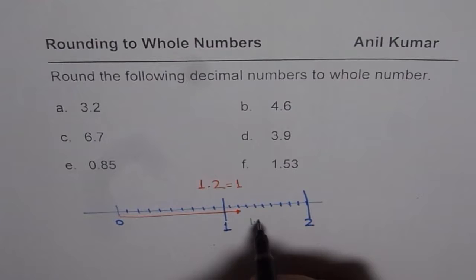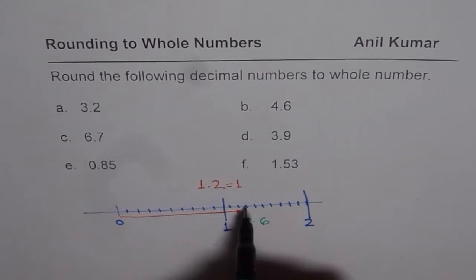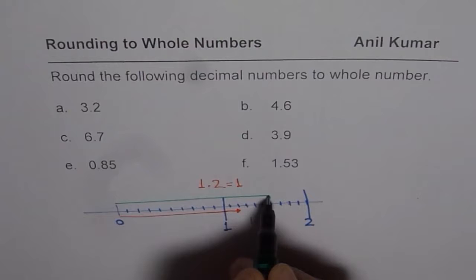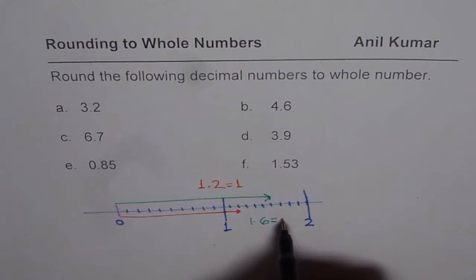If you have a line which is, let us say, 1.6, in that case, this is 0.1, 0.2, 0.3, 0.4, 0.5, 0.6, right? So the line is going to be that long. Clearly, this line is closer to 2, and therefore, we round it to 2.